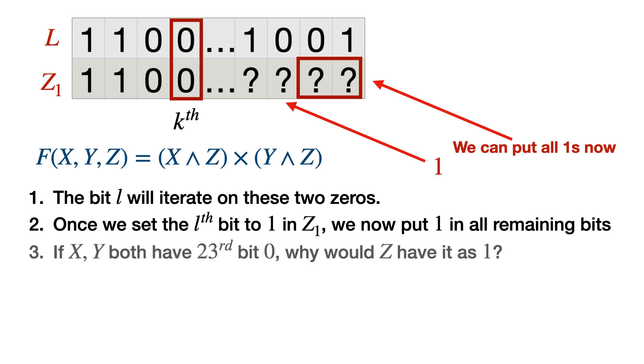At the same time, if both X and Y are having some bit as zero, I can keep that bit as zero in Z also because it does not maximize my answer. It does not in fact change the answer. I will also ensure that I am keeping my Z value as small as possible because in case of multiple answers, I really want to pick the smallest Z.